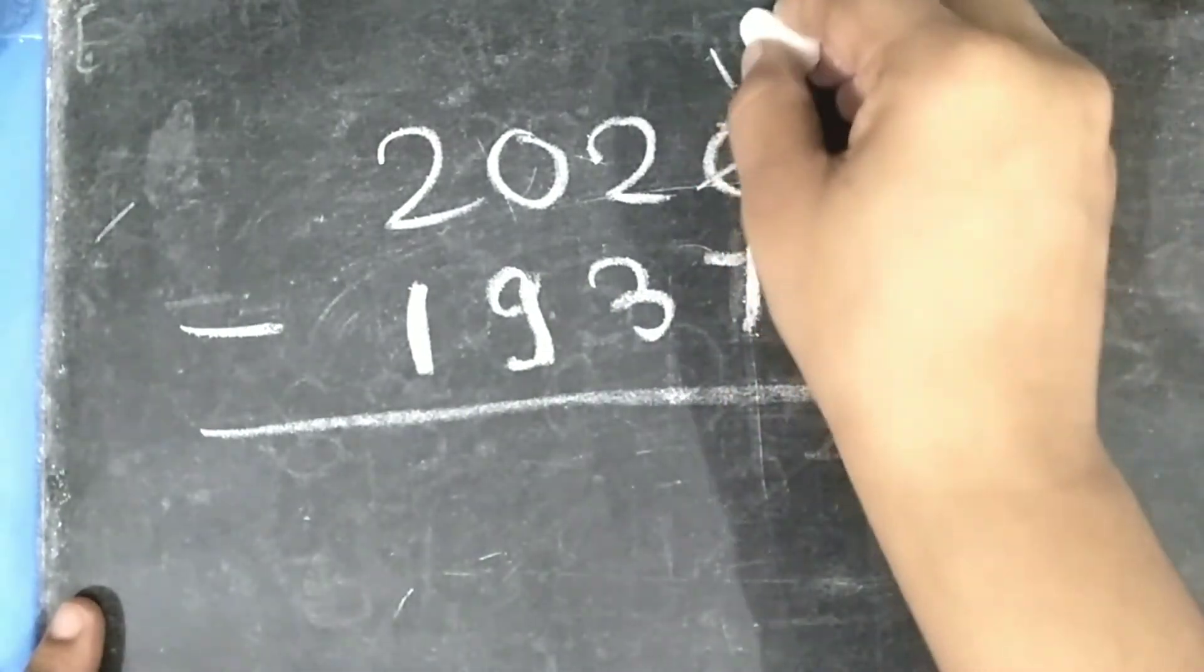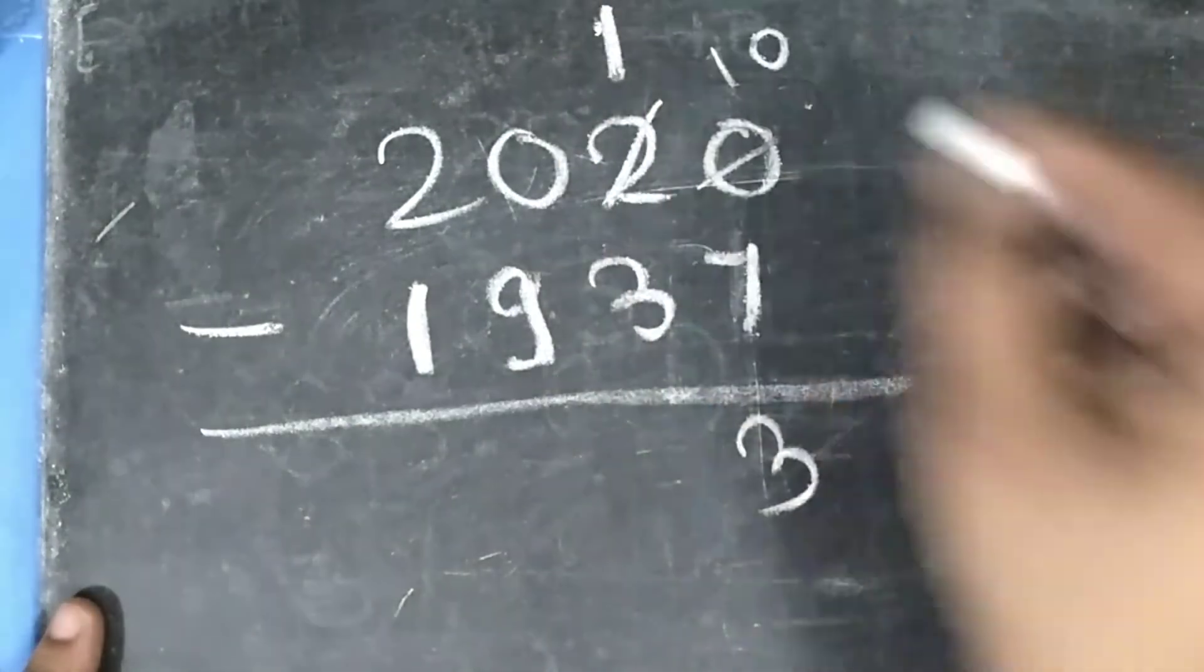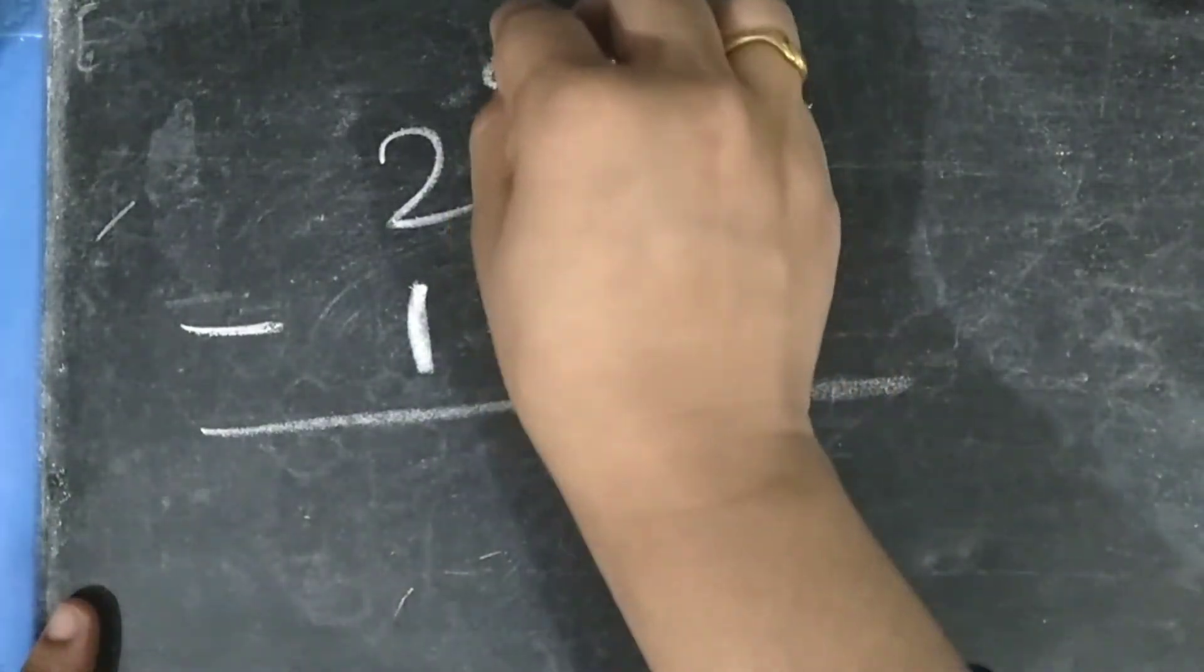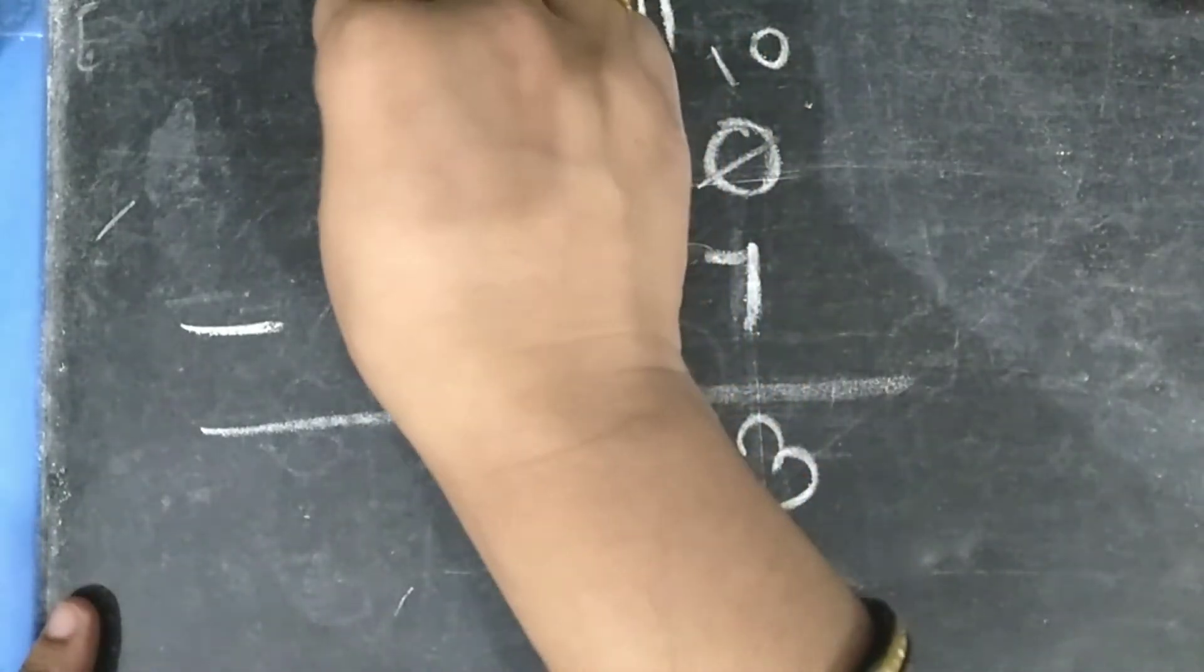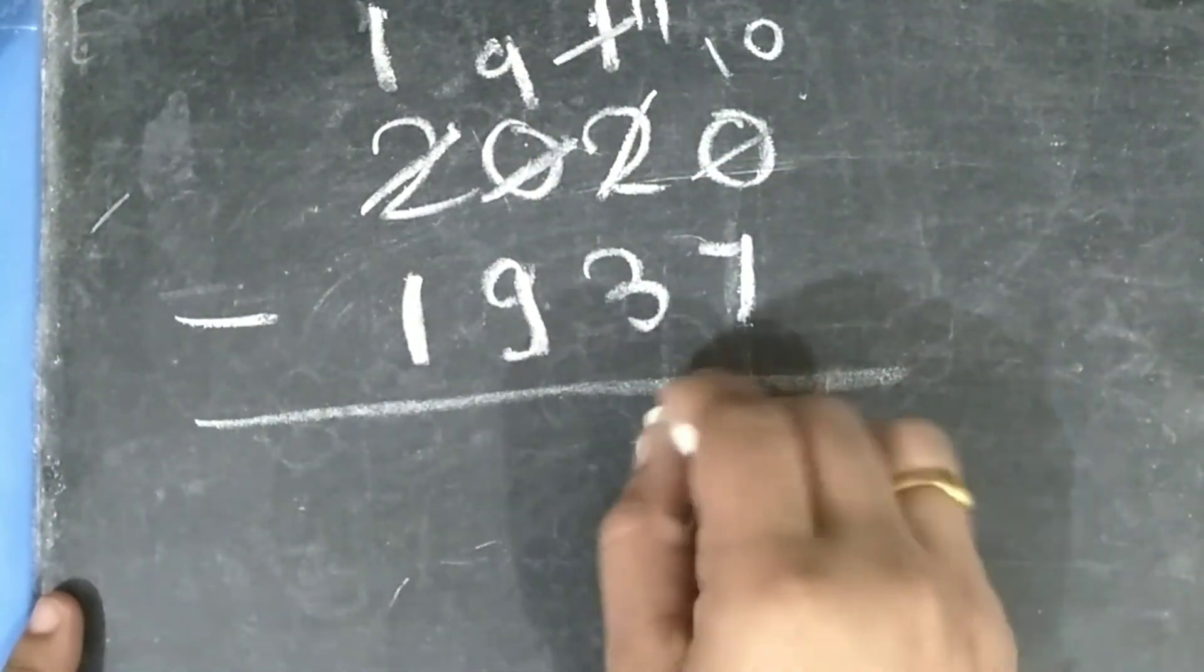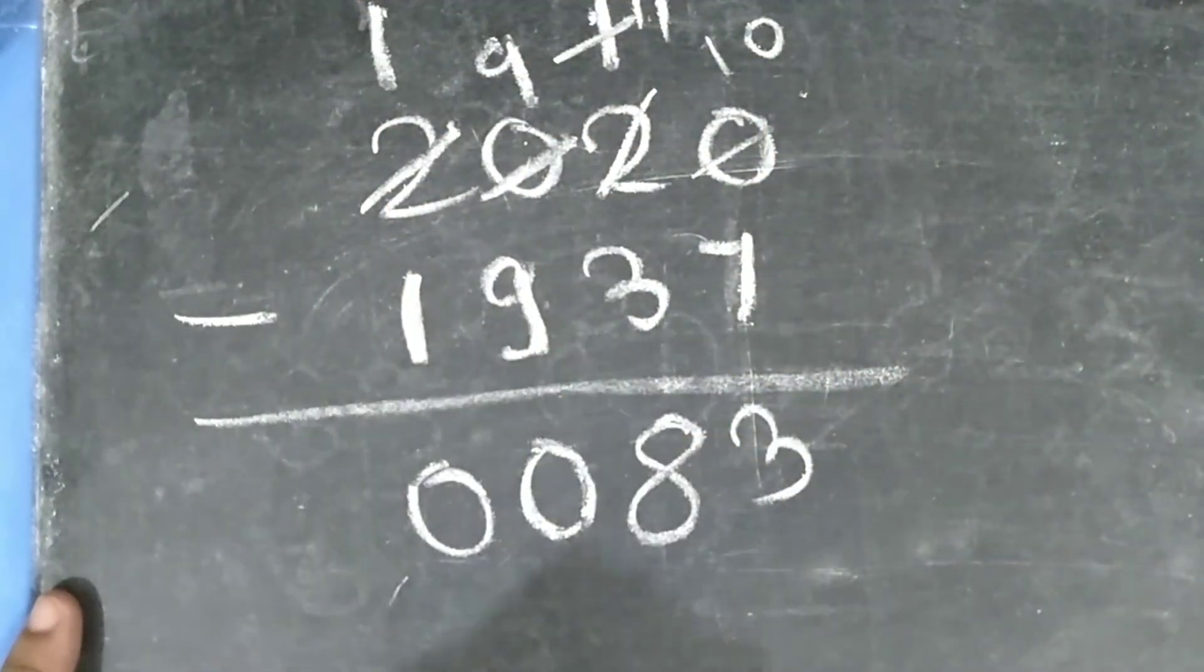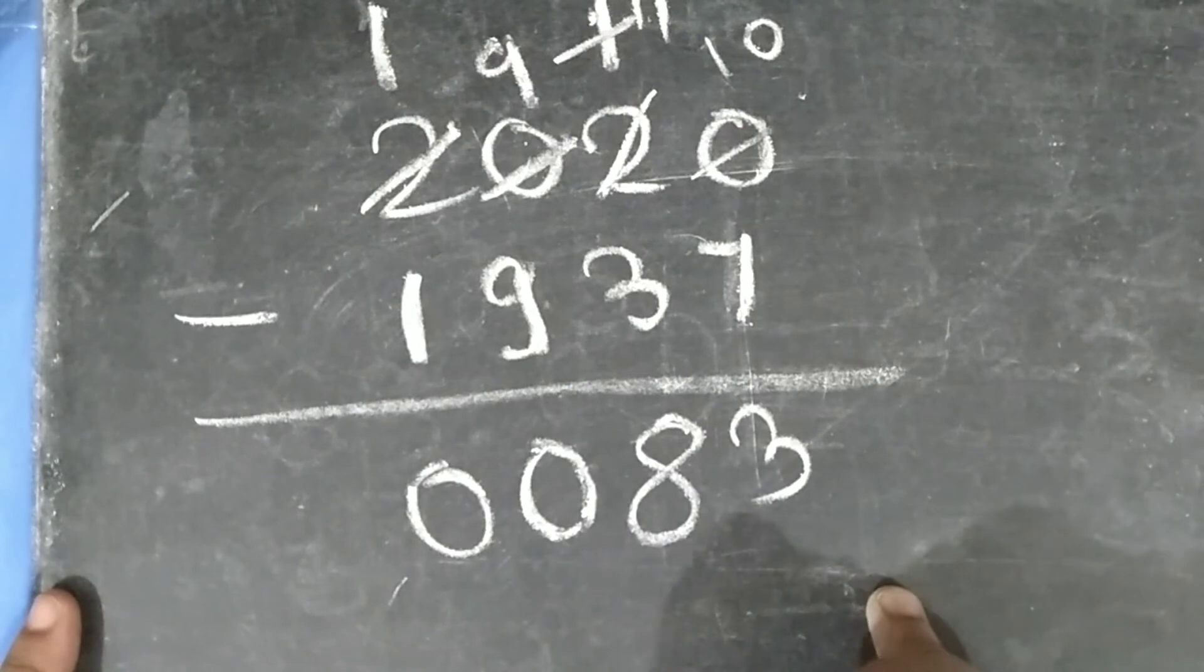Your current year is 2020 minus invention year of photocopier is 1937. So let's subtract. 10 minus 7 is 3. You have here is 1. 1 minus 3 is not possible, so this is 11 and this will be 9. How? We will minus the element in 1000 place. 11 minus 3 is 8. 9 minus 9 is 0. 1 minus 1 is 0. Means 83 years ago photocopier was invented.